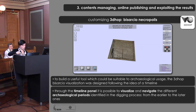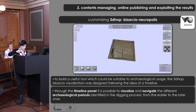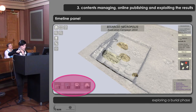To build a useful tool suitable for archaeological usage, the 3D HOPE visualization interface was designed following the idea of a timeline. Through the timeline panel, it is possible to visualize and navigate the different archaeological periods defined in the digging process. It is possible to go from the earlier to the later periods. For instance, you can look at the late medieval cemetery phase and explore the cemetery contexts before they were dug, or after removing the fills when the skeletons are highlighted, or view all the grave trenches after removing the burials.